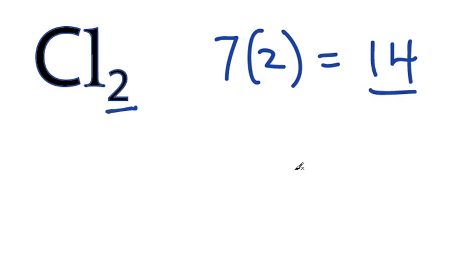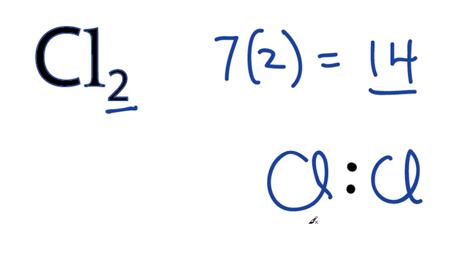We're going to spread those around the atoms, fill the octets, and form a chemical bond. So here's the chlorine and another chlorine, and let's start by putting 2 valence electrons between the chlorines, that forms the chemical bond, and then we're going to spread them around the outside atoms.